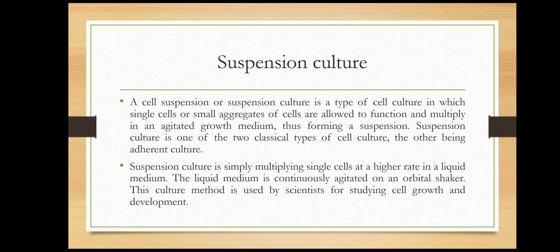The next type is suspension culture. A cell suspension or suspension culture is a type of cell culture in which single cells or small aggregates of cells are allowed to function and multiply in an agitated growth medium, thus forming a suspension. Suspension culture is simply multiplying single cells at a higher rate in a liquid medium. This liquid medium is continuously agitated on an orbital shaker and is mainly used by scientists for studying cell growth and development.